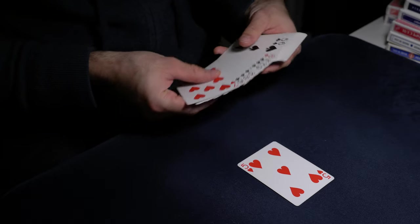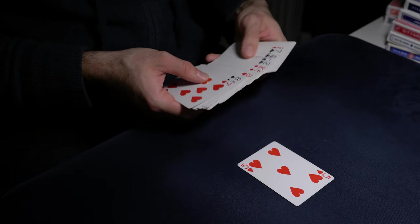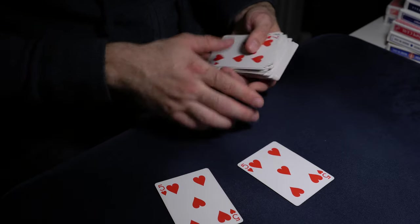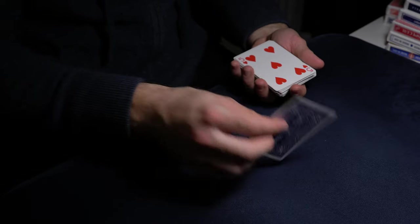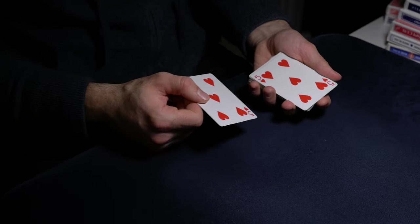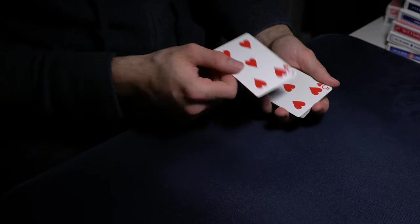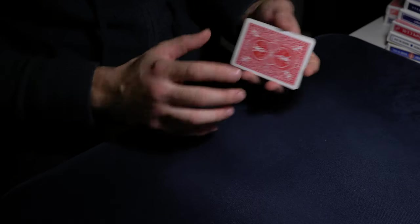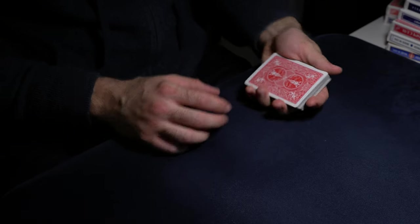Now what you need for this is a duplicate card of a different colored deck. In this case I'm using the five of hearts. So what you're going to do is set up with the different colored one on the bottom and you're good to go.